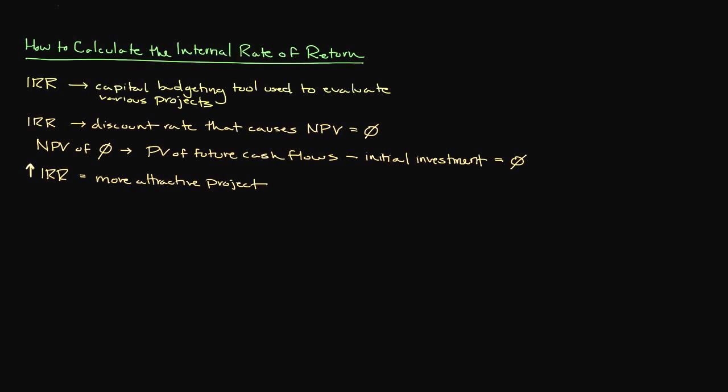In order to calculate the IRR, we need to go through a trial and error process utilizing the present value formula. As an example, let's say that you're planning on investing $5,000 in a project that is expected to produce $2,500 in cash at the end of year 1 and $3,500 in cash at the end of year 2. What is our expected internal rate of return?